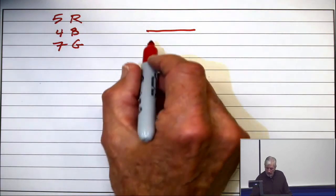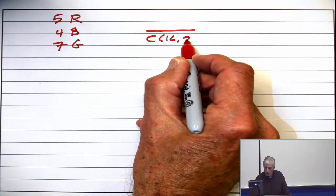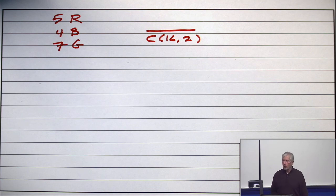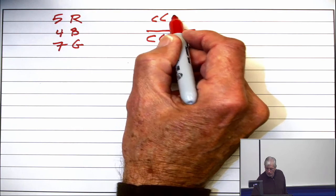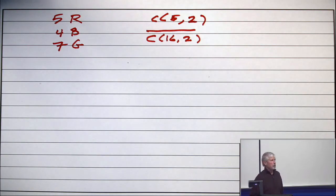So my denominator is 16 choose 2 or C(16, 2). How many ways to have them both red? So out of the five red ones, choose two of them. So C(5, 2) over C(16, 2).